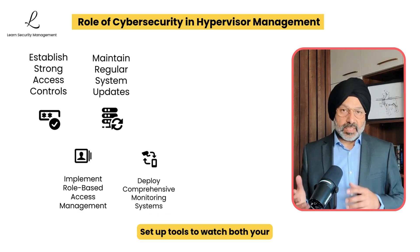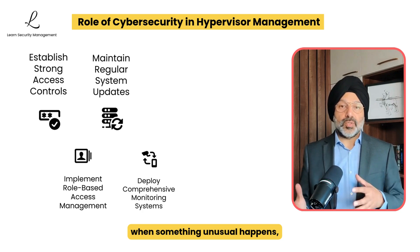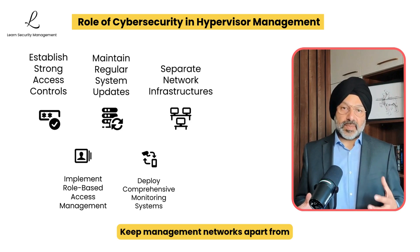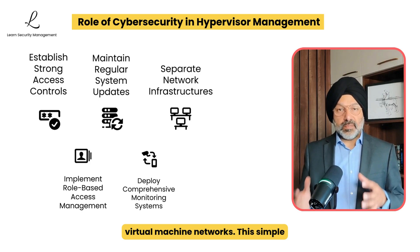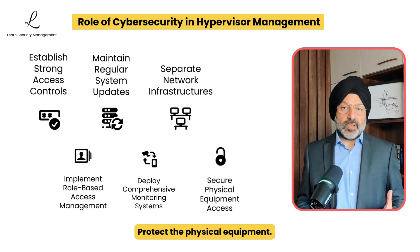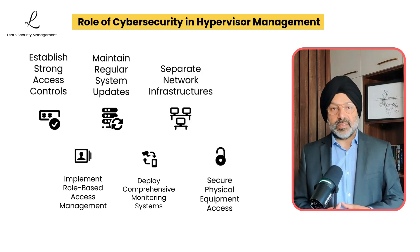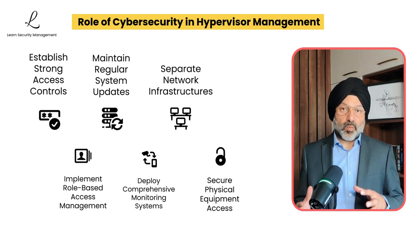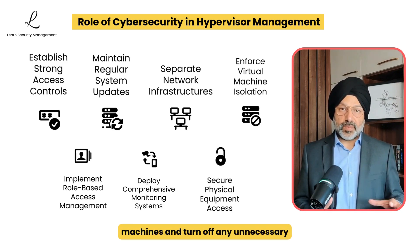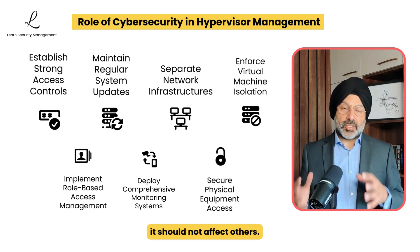Always monitor your systems — set up tools to watch both your hypervisor and the network traffic between virtual machines. Security monitoring tools can alert you when something unusual happens, helping you respond quickly to possible threats. Separate your networks by keeping management networks apart from virtual machine networks; this simple step prevents security problems from spreading if one area is compromised. Secure the rooms where your servers are located, limit who can access these areas, and keep records of who enters, because even the best digital security can be defeated if someone has physical access to your equipment. Finally, set clear boundaries between virtual machines and turn off any unnecessary features that might create security gaps — if one virtual machine is compromised, it should not affect others.